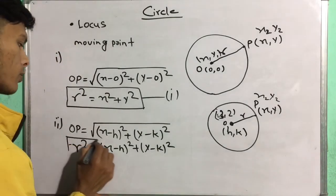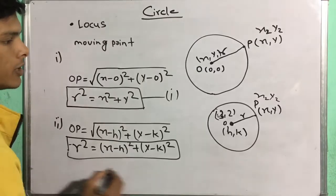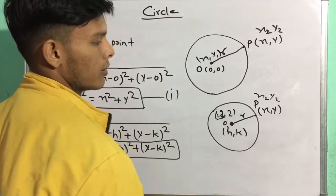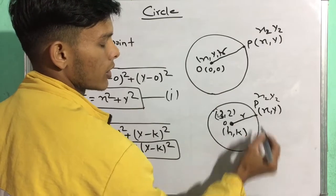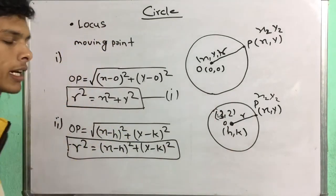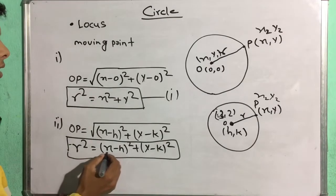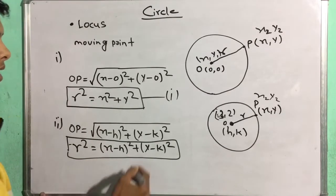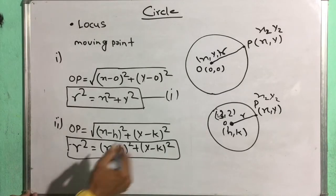This gives any point on the circle. The circle's equation — any point lying on the circle satisfies this locus. So the circle's equation is: (x - h)² + (y - k)² = r².